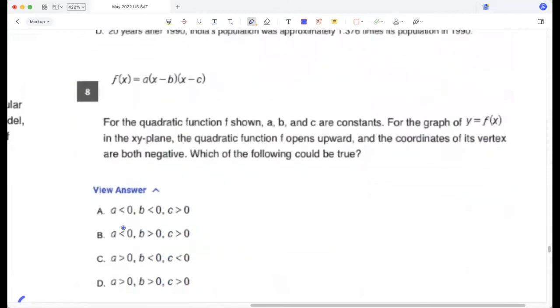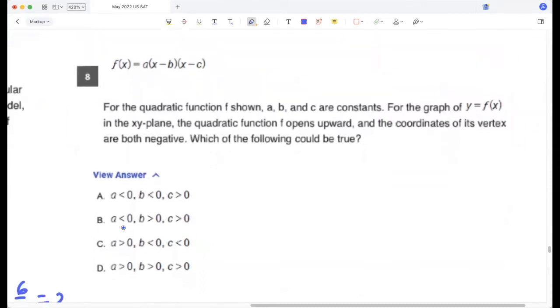For the quadratic function shown, A, B, and C are constants. For the graph of y equals f(x), the quadratic function opens upward and the coordinates of its vertex are both negative. Which of the following could be true? Okay, so it looks like this, right? So then A is positive because it's the leading coefficient and it's opening upward, and B and C will be negative, right? So A is positive and B and C are negative. C.